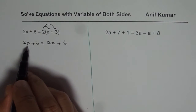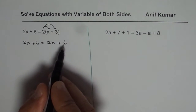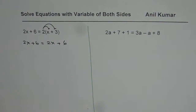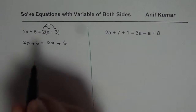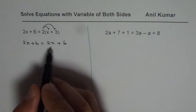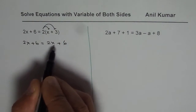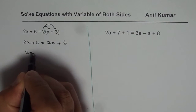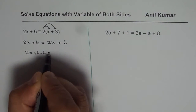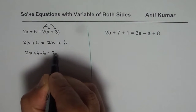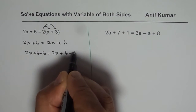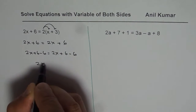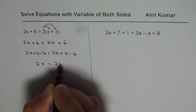Now we see that 2x plus 6 equals 2x plus 6, so it seems to be true. Let us find the value of x. Taking away the numbers first: 2x plus 6 minus 6 equals to 2x plus 6 minus 6. So we get 2x equals to 2x.